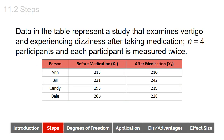Let's take a look at some data — it's easier to visualize when we're putting real numbers to all of this. This is a study that examines vertigo and experiencing dizziness after taking medication. There are four participants, and each participant is measured twice. You'll notice that we have X1 and X2. X1 means the first score and X2 is the second score, so there's a temporal order: this score happens before that score. In this study, participants were measured before medication and after taking medication.